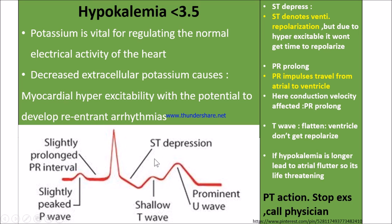ST depression and T wave inversion occur due to lack of oxygen supply. With a hyperexcitable myocardium pumping more, oxygen is lacking, producing ST depression and shallow T waves. The PR interval becomes slightly prolonged — it denotes travel from the SA node to the AV node — because conduction velocity is decreased. The T wave becomes shallow or flattened because the ventricle does not get adequate repolarization.